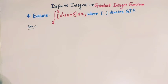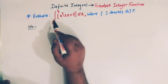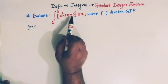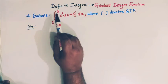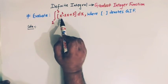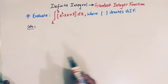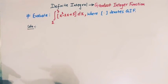Hello viewers, in today's class we are going to solve an important definite integral which involves the greatest integer function. Here we have to find the value of this definite integral from 2 to 3 of the greatest integer function of x squared minus 2x plus 5, dx.